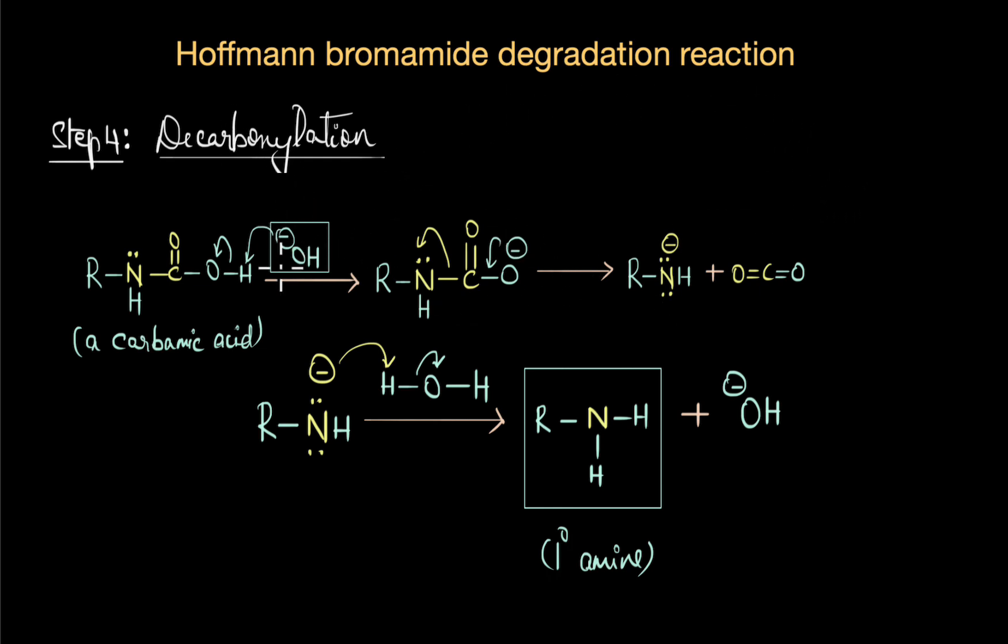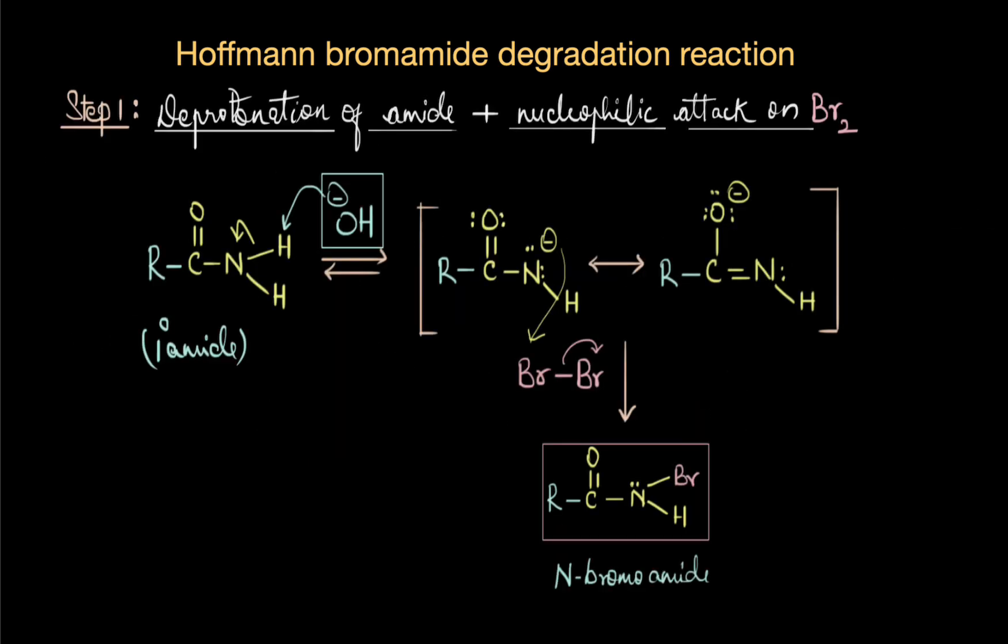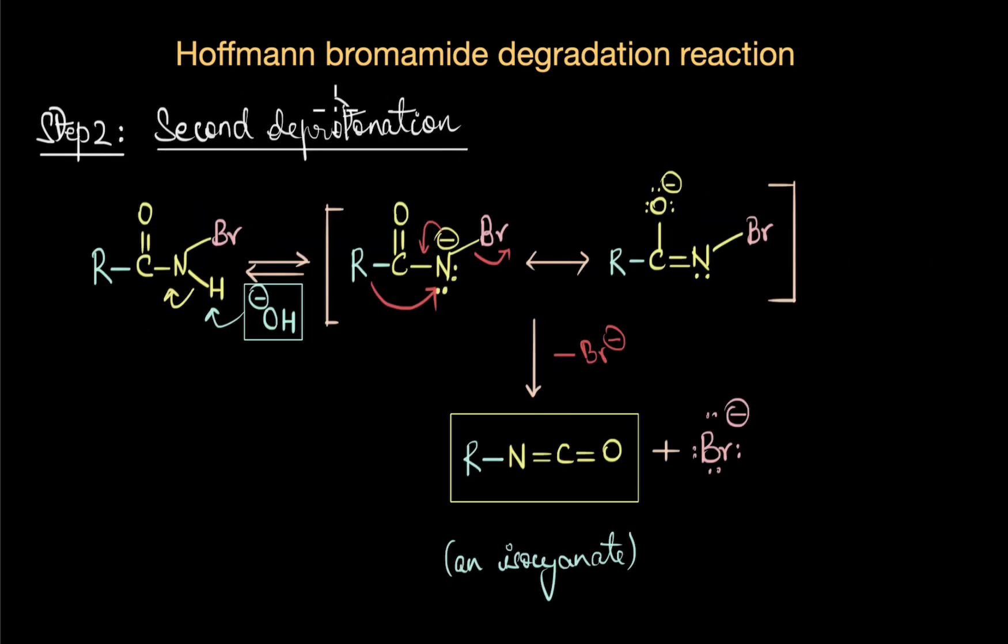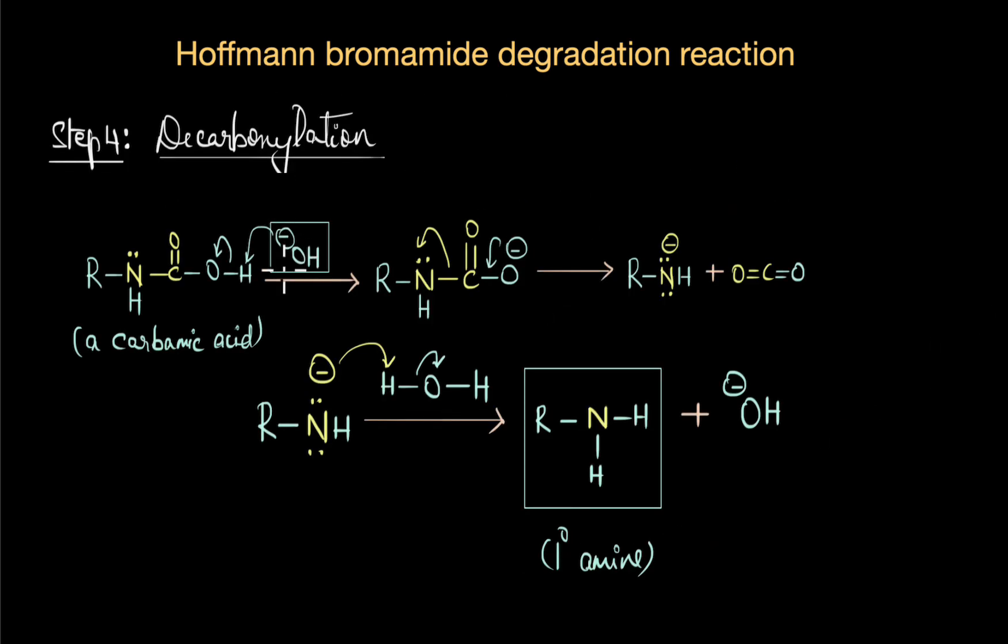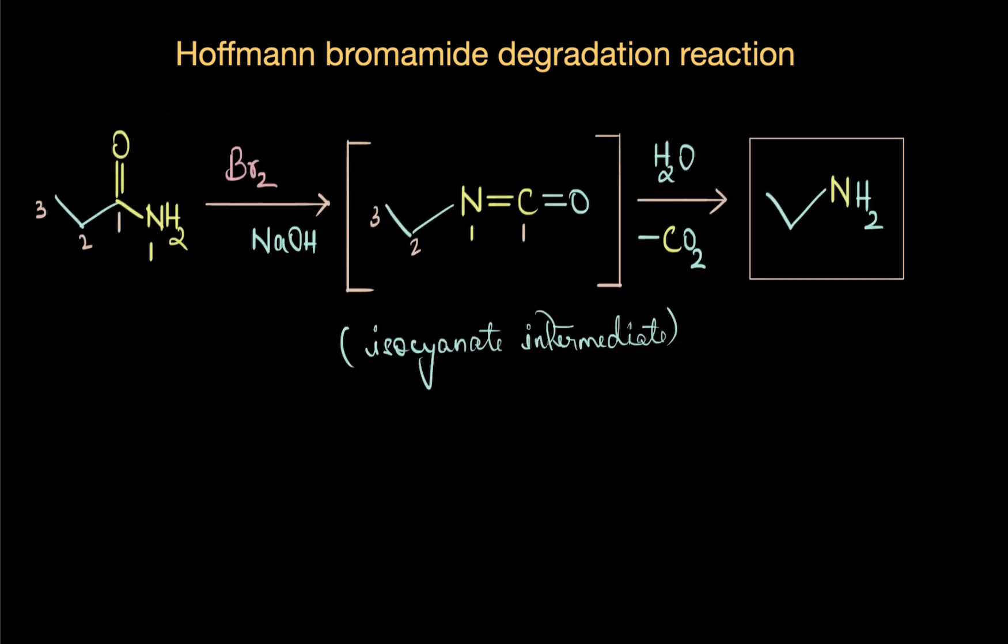You'll notice that in each step I have highlighted OH- in certain boxes. This is to see how much OH- is getting consumed in this entire reaction. The first deprotonation step consumes one mole of OH-. In the second step we again need OH-. In the third step we use OH- to form a carbamic acid, and in the last step we again need OH- in the decarboxylation step to release CO2. In this entire process we are using 4 moles of NaOH.